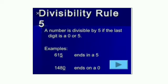Divisibility rule by 5: a number is divisible by 5 if the last digit is 0 or 5. Example: 615 — the last digit is 5, so it is divisible by 5. In 1,480 the last digit is 0, so it is also divisible by 5.